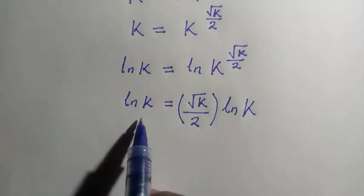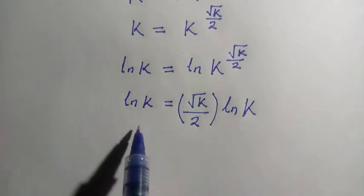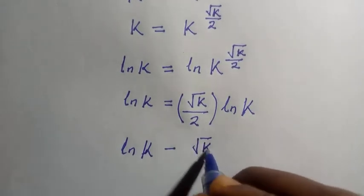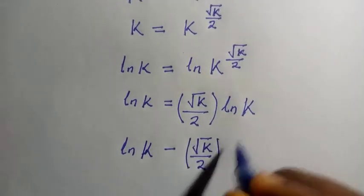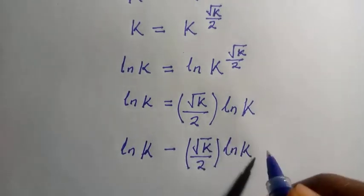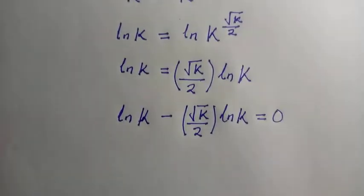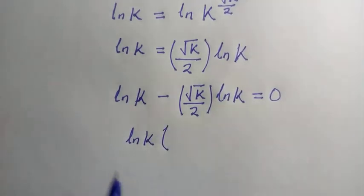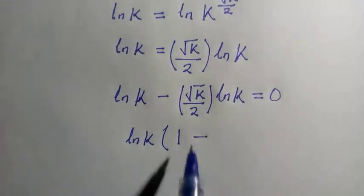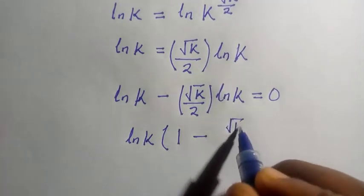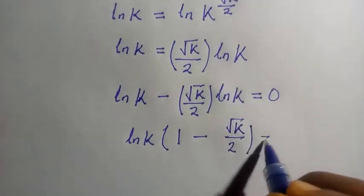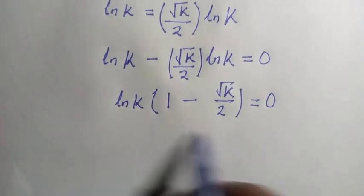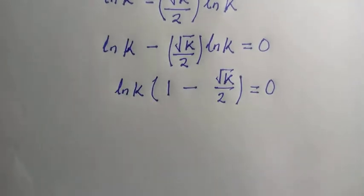So we can take either term to one side. Suppose I take this one here — we are going to have ln k minus the square root of k divided by 2, in brackets, times ln k equals 0. So ln k is common. When we factor it out, we have ln k open bracket: dividing through by ln k gives 1, minus square root of k divided by 2, close bracket, all equals 0.